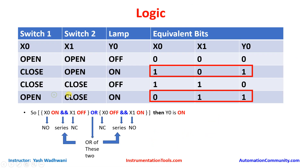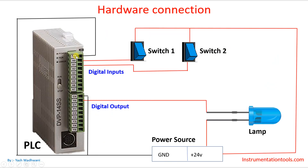Let us see the hardware connection. From the power source, I will connect the ground terminal to the source sink of digital inputs and 24-volt supply to the input of both switches. I will connect the other terminal of switch 1 to input X0 and the other terminal of switch 2 to input X1. On the output side, I will connect the ground of the power source to common, Y0 to one terminal of the LED, and the other terminal of the LED to 24-volt supply.